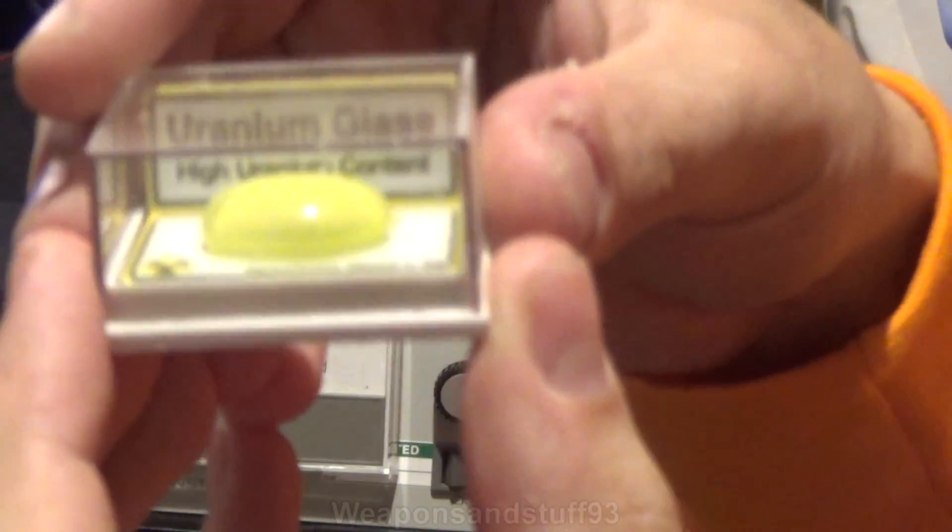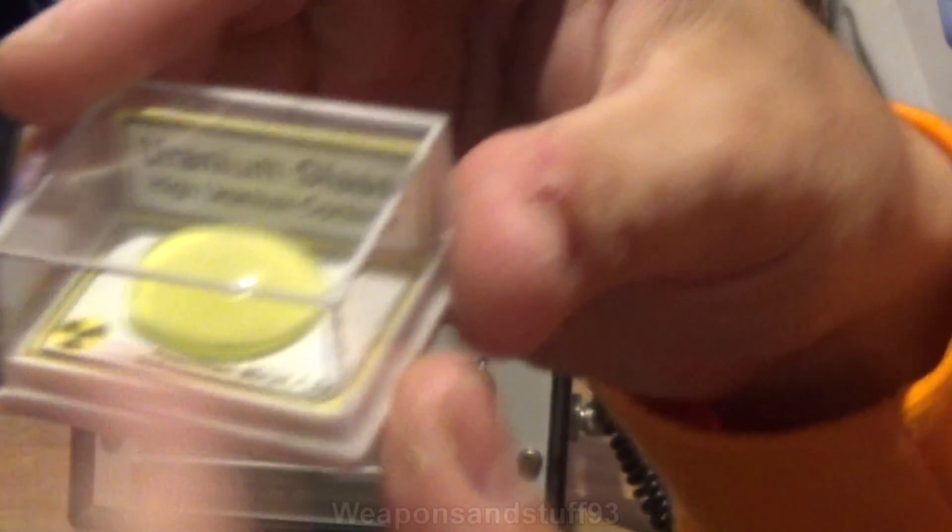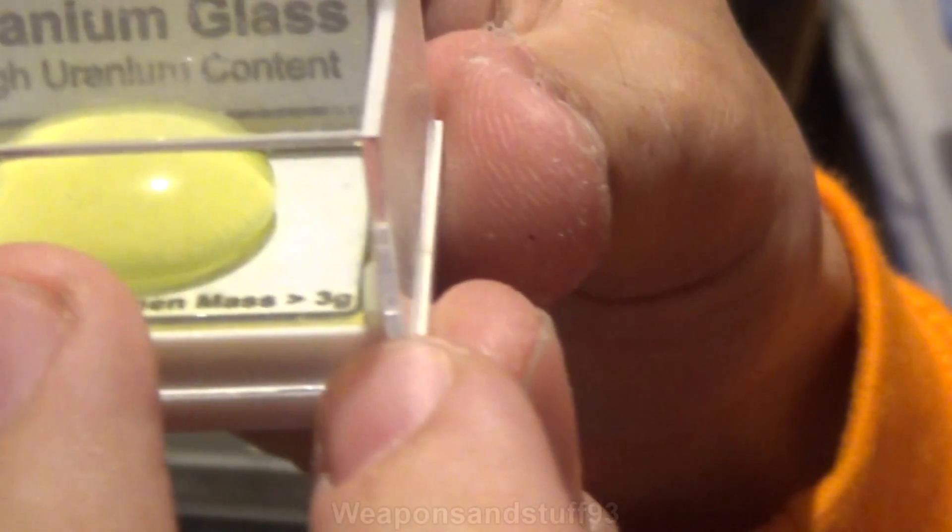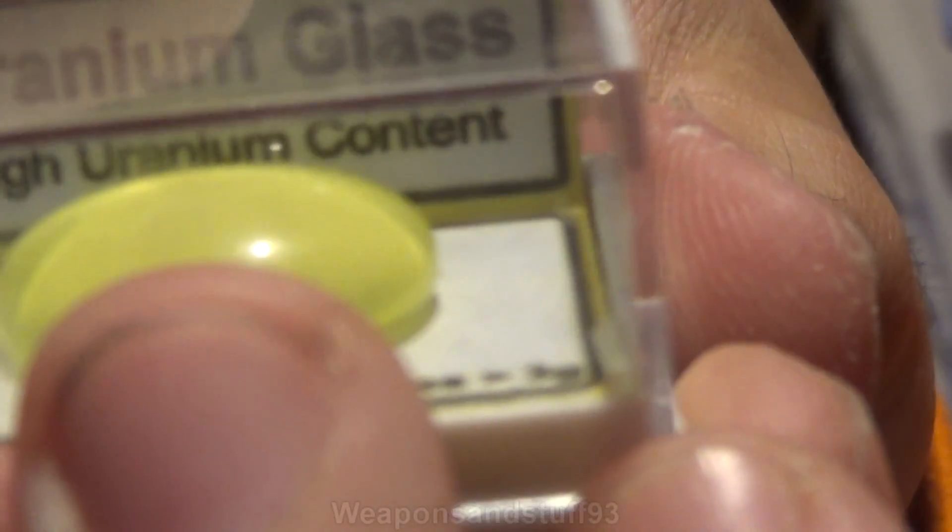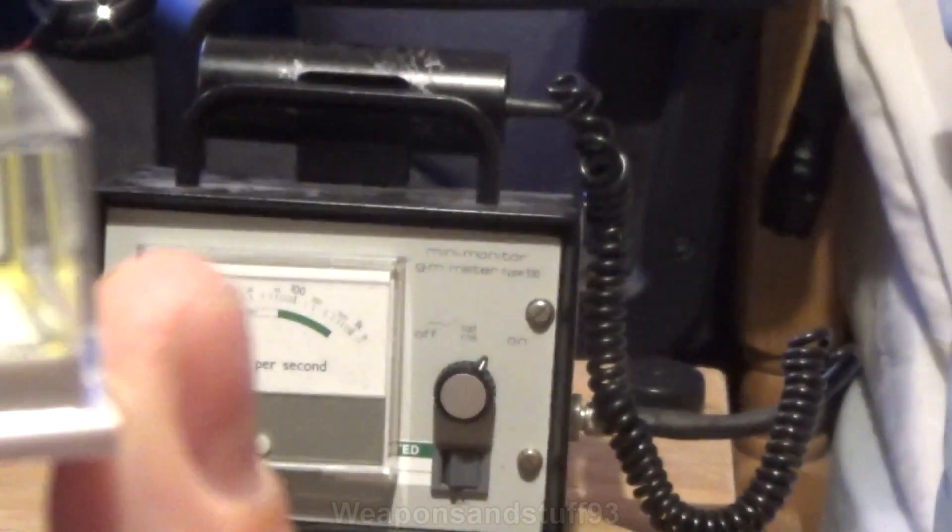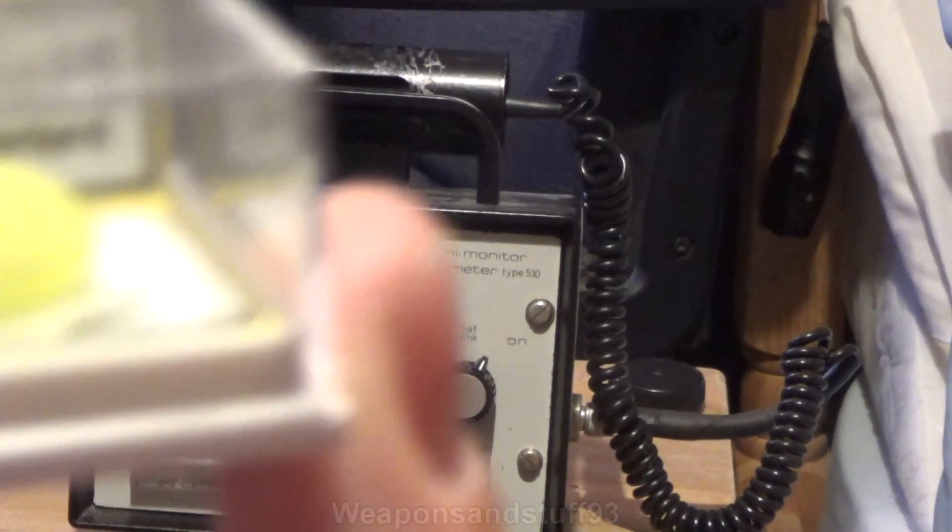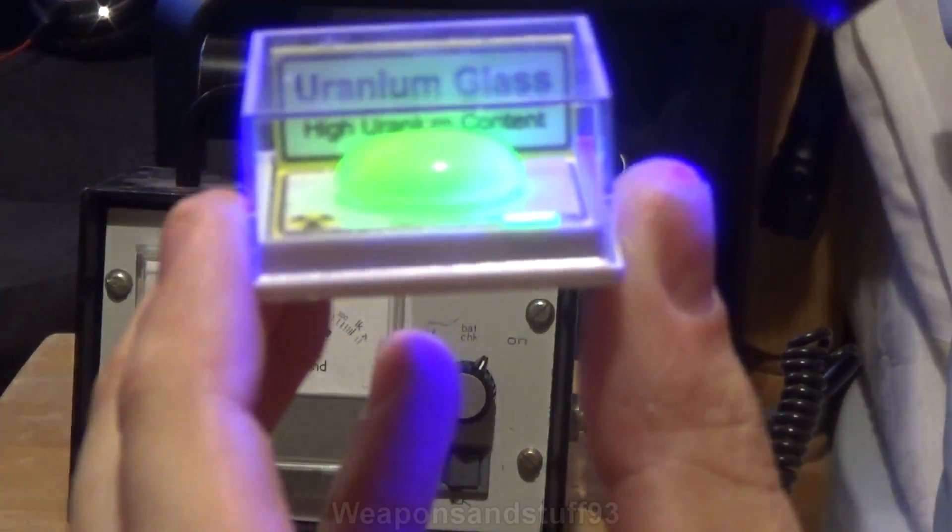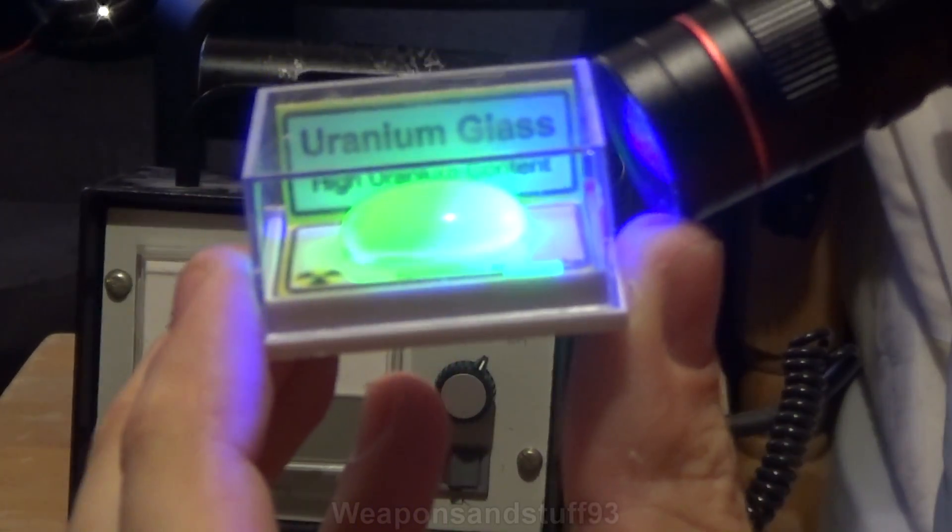In here there's some radioactive glass, uranium glass, and a bit of tritium. The tritium is that little bit down the corner. The tritium glows really nicely in the dark, but unfortunately using a camera it's quite difficult to show how well some of this stuff glows. You'll hopefully be able to see that both the uranium glass and the tritium glows.